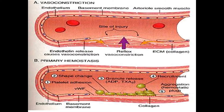The first step will be vasoconstriction. This will be induced by neurogenic activity induced by nerves, myogenic activity induced by the smooth muscles of the vessel, and also by endothelin, a substance that is a potent vasoconstrictor produced by endothelial cells.